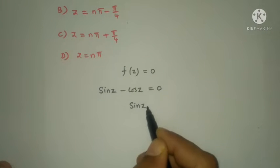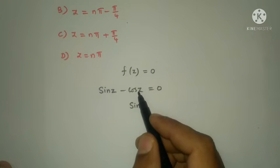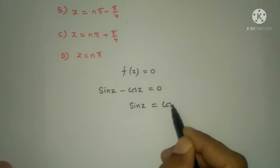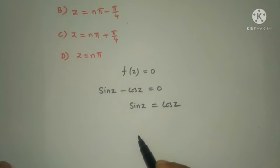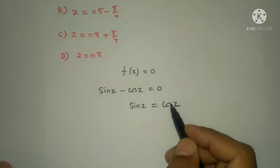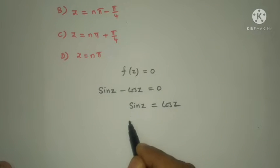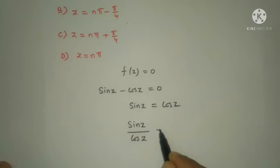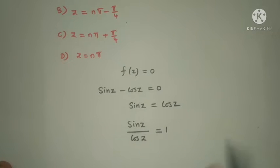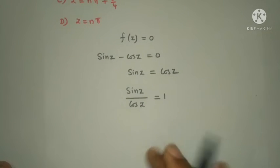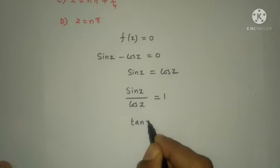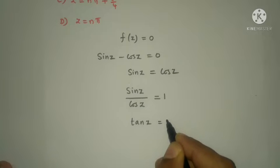From sin z minus cos z = 0, move cos z to the right side: sin z = cos z. Dividing both sides by cos z gives sin z over cos z equals 1, that is tan z equals 1.